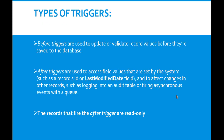There are two types of triggers: before triggers and after triggers. Before triggers are used to update or validate record values before they are saved to the database. After triggers are used to access field values set by the system, such as record IDs or the last modified field, and to affect changes in other records like logging to an audit table or firing asynchronous events with a queue. An important point: the records that fire the after trigger are read only.